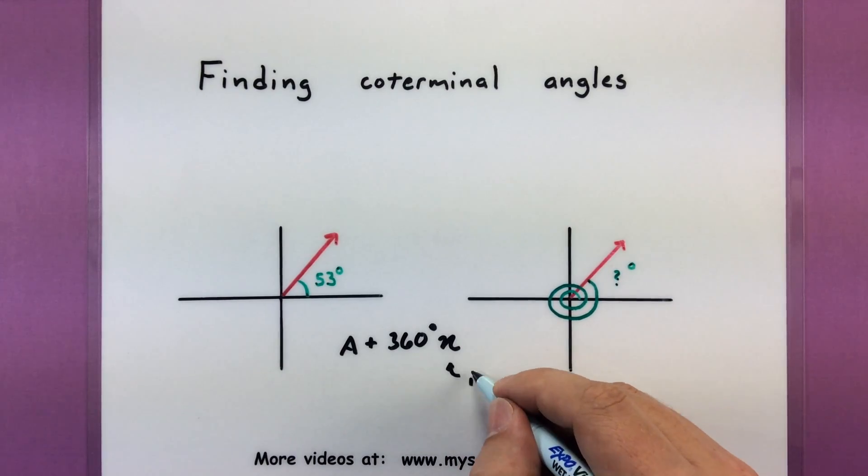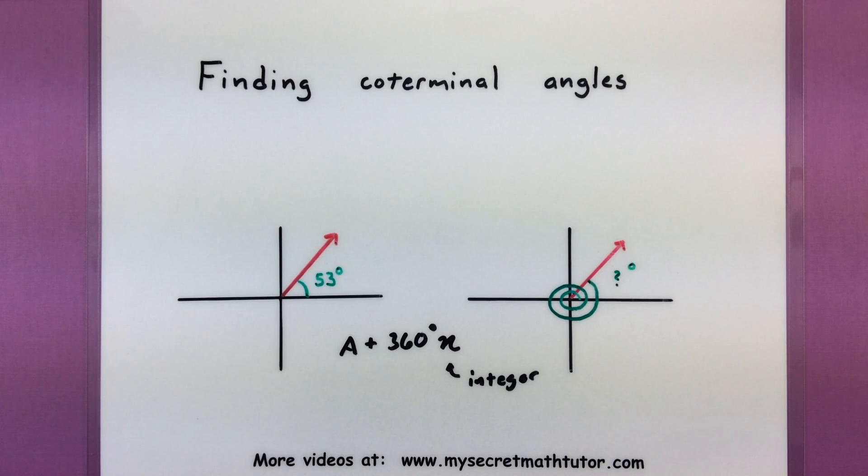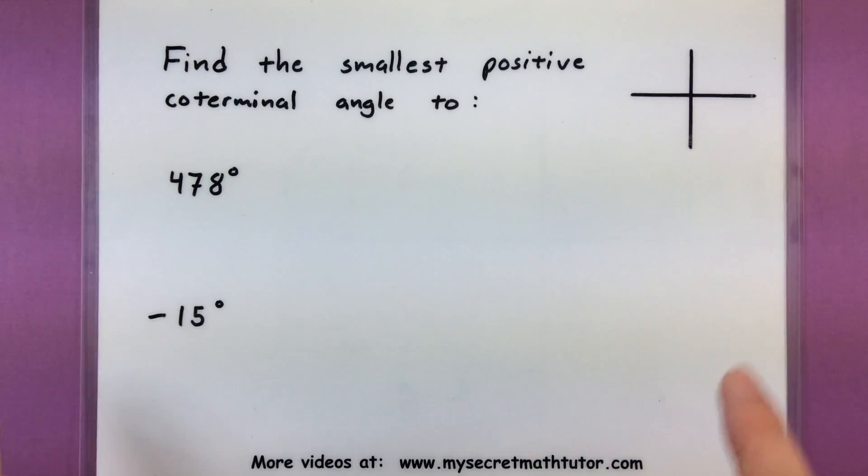This little n here just represents any type of integer. Intuitively the way you want to think of this is I'm going to take my angle and either add 360 a whole bunch of times or subtract 360 a bunch of times. Either way that will give me something that is coterminal. So let's get into an example and see how this works.